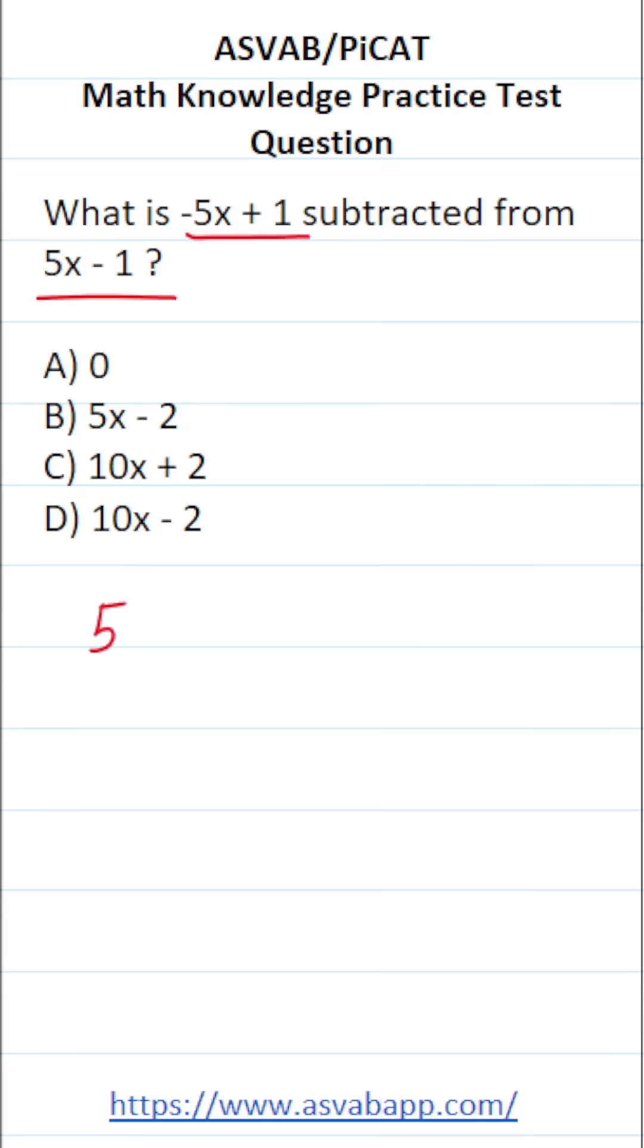We're going to set it up like this: 5x minus 1. And from this, we're subtracting this entire second polynomial. So we have to use a subtraction sign as well as a set of parentheses. So this is going to be minus negative 5x plus 1. And why is that important?